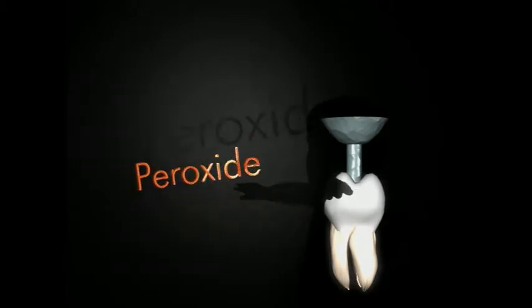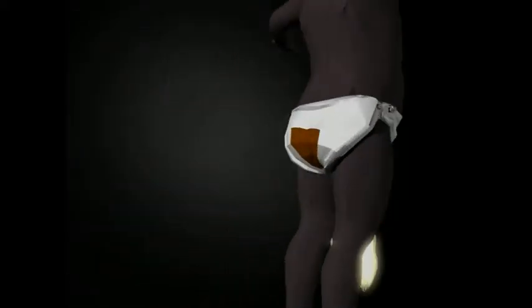The next step is to try to sterilize the tooth. This is done initially by washing the inside of the tooth with hydrogen peroxide and sodium hypochlorite, the bleach used for cleaning dirty nappies.